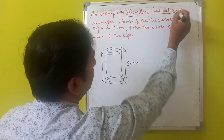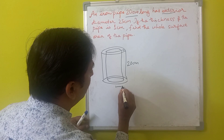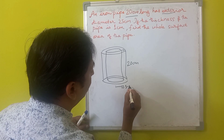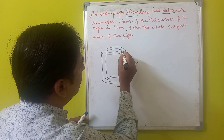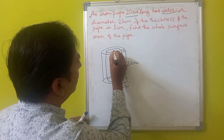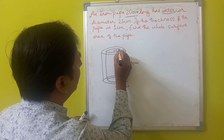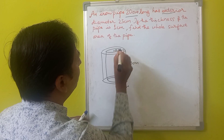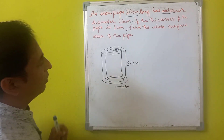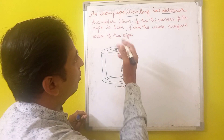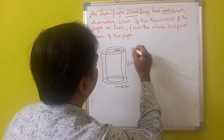It has an exterior diameter of 25 centimeters, so the exterior radius (capital R) will be 12.5 centimeters — half of 25. As the thickness is 1 centimeter, the internal radius (small r) will be 11.5 centimeters. So we have got all the required dimensions to solve this problem.